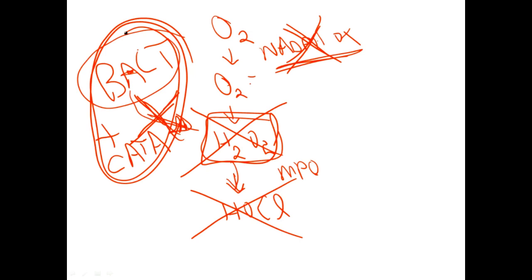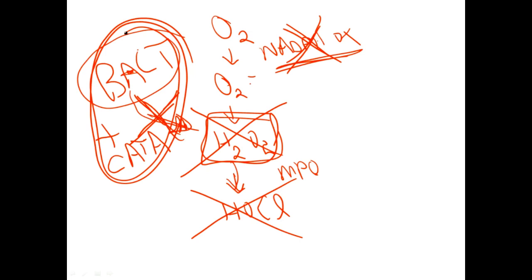That is actually very high yield. There are five organisms that patients with CGD get infections with. Staph aureus is a catalase-positive bug and a common one that would arise in a patient with chronic granulomatous disease — but staph aureus is known by almost every medical student and isn't the one that shows up on examinations most often.